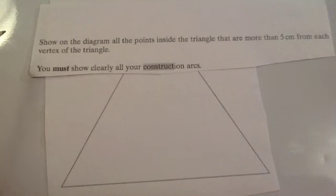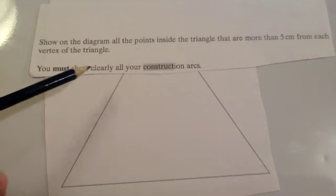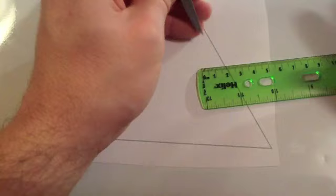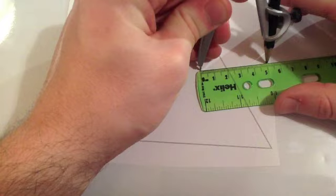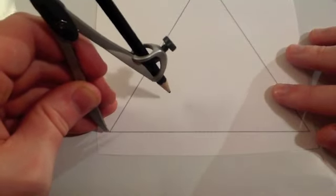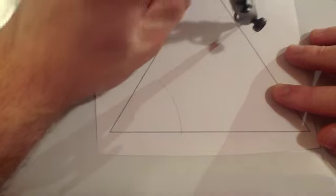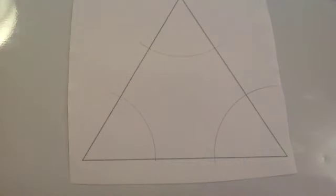Let's try another example. This time it says show on the diagram all the points inside the triangle that are more than 5 centimetres from each vertex — each corner of the triangle. You must clearly show your construction arcs. Because it's a given distance from a point, it's going to be a circle. Measure 5 centimetres on your compass. Anywhere within these arcs is closer than 5 centimetres, and outside the arcs is further than 5 centimetres. Since it says inside this triangle, the region R is here in the middle.